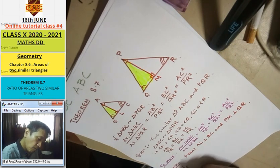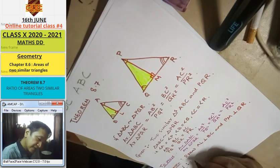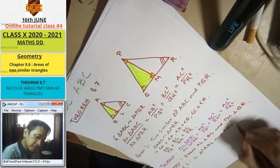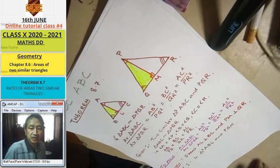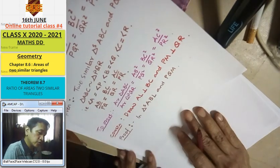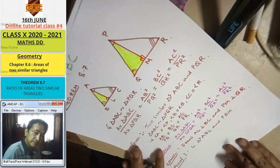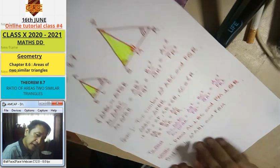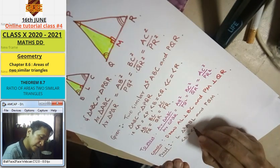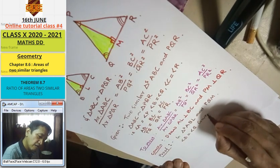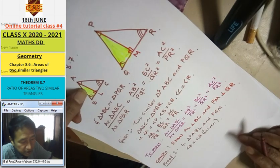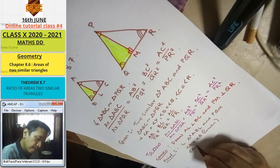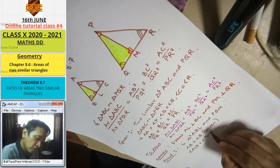Proof: Consider triangles ABL and BQM. Angle B equals angle Q. Angle ALB equals angle BMQ, which is equal to 90 degrees, since AL and PM are perpendiculars.